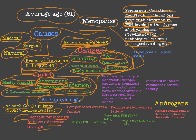As primordial follicles decrease, estrogen secretion decreases because estrogen is secreted from these follicles. The body tries to compensate by secreting large amounts of FSH — this is compensated ovarian failure, characterized by high FSH. Eventually the body fails to compensate, leading to decompensated ovarian failure, where FSH levels rise up to 10–20 fold, and LH levels also rise, about three fold.